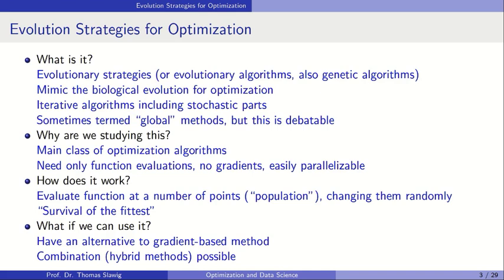These are stochastic optimization algorithms, and sometimes they are termed global methods, though this is debatable. Rechenberg himself, as developer of these methods, says they are also local methods — we will come to this. The term 'global method' is motivated by the fact that in applications we would always like to find a global optimum. We have seen that our prior methods only find local minimizers, and globalized versions of gradient or Newton methods also do not guarantee finding a global minimum.